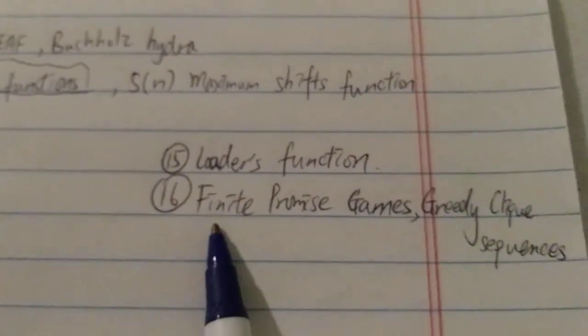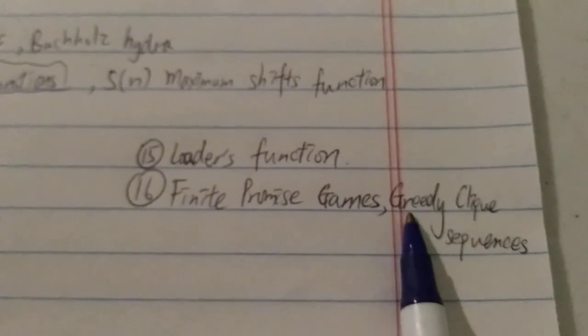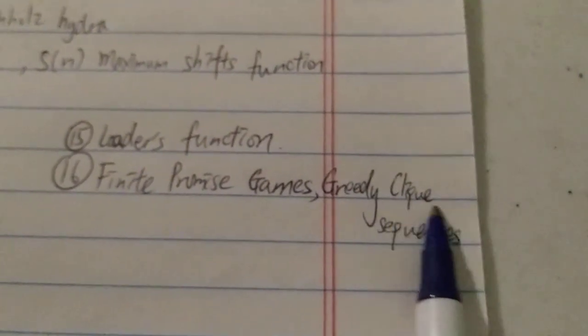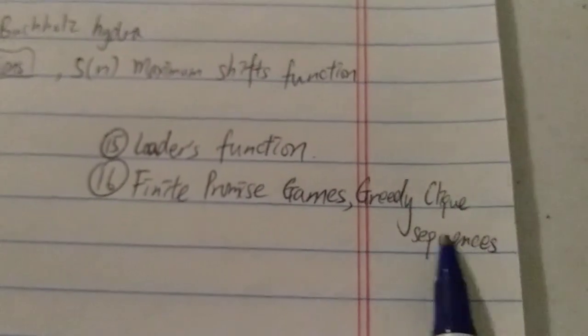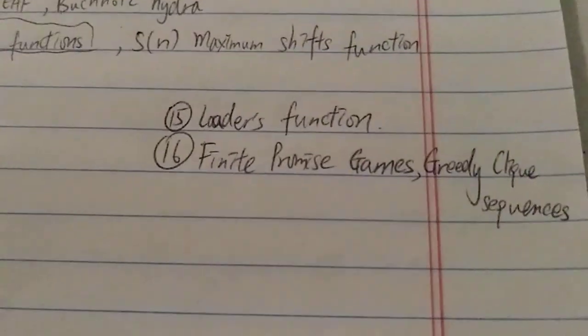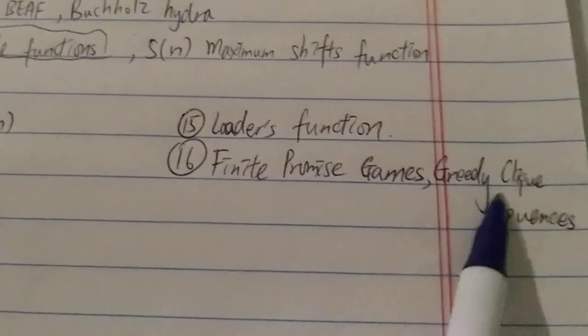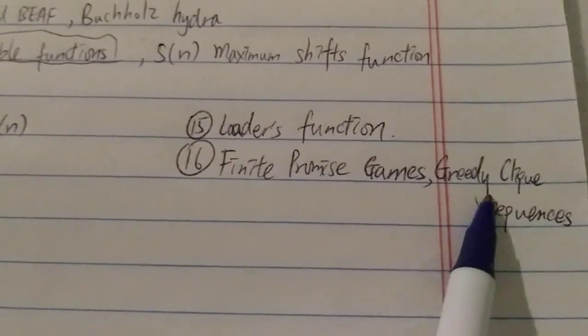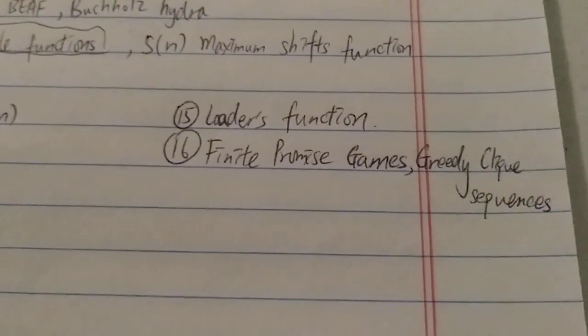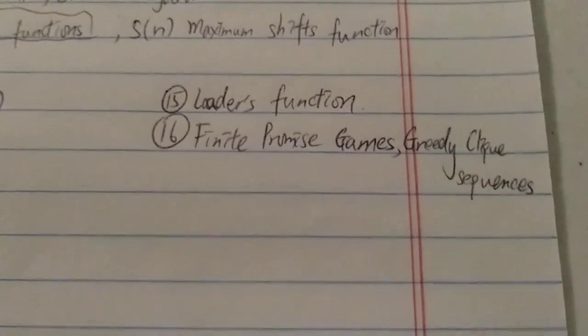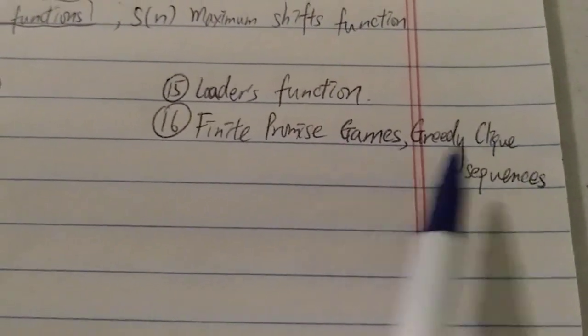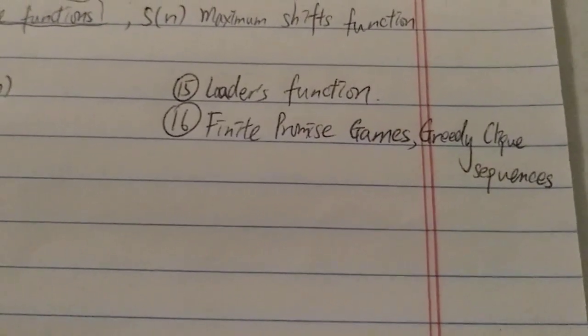And then next, number 16, we have the finite promise games and the greedy clique sequence. And this one, some people say it's not very well-defined. I'm not so sure. This is not too many info about these two sequence functions over here.